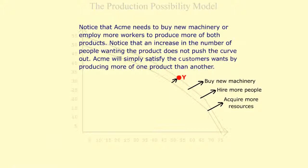Notice that Acme needs to buy new machinery or employ more workers to produce more of both products. Notice that an increase in the number of people wanting the product does not push the curve out. Acme will simply satisfy the customer's wants by producing more of one product than the other.